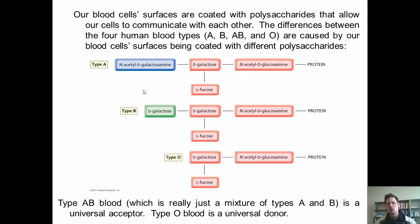Polysaccharides are extremely important in helping our cells communicate with each other. Nearly all of our cells' phospholipid membranes are coated with various sugar polymers that facilitate intercellular communication. Our blood cells' surfaces are coated with polysaccharides that allow them to communicate with each other.